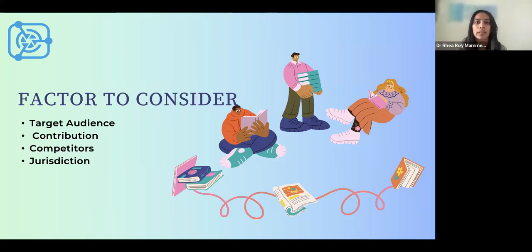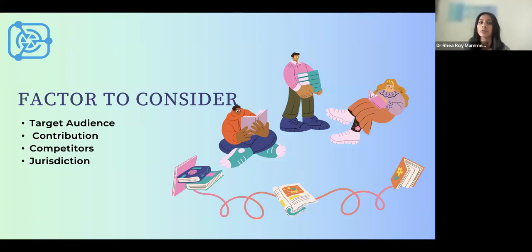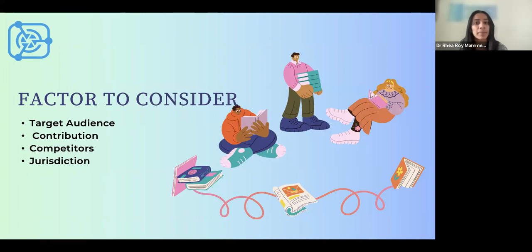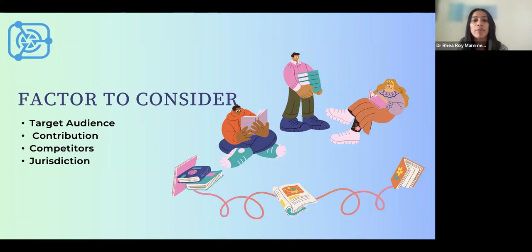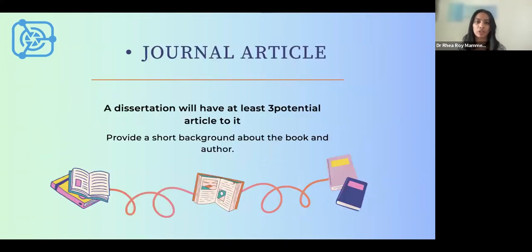The fourth important thing to consider is the jurisdiction where you want it published — it could be national, international, or even regional. It's important to specify your jurisdiction before you consider the idea of publication.